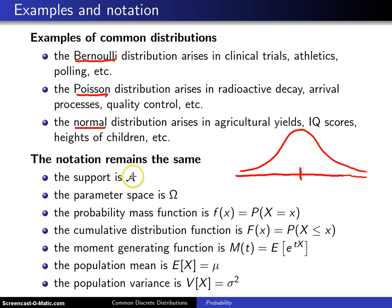The notation remains exactly the same from before. The support will be still given by script A. The probability mass function, since we're doing discrete random variables in this chapter, will still be f of x. It is interpreted as the probability that the random variable X takes on the value little x. The cumulative distribution function, the CDF, is still F of x, the probability X is less than or equal to x.